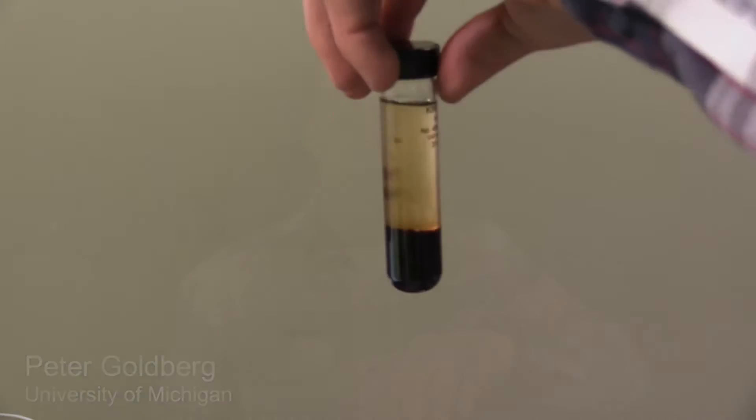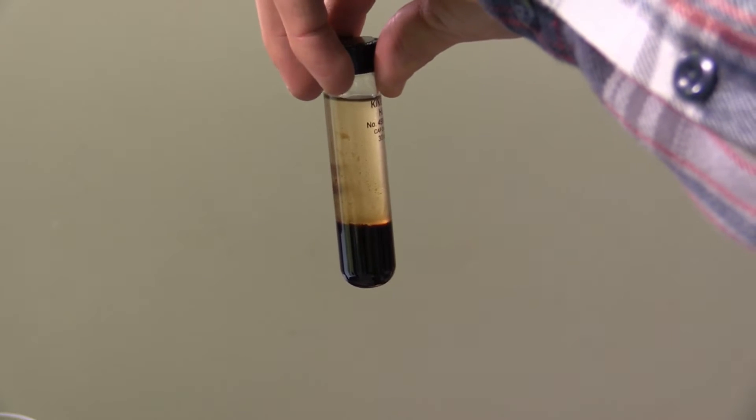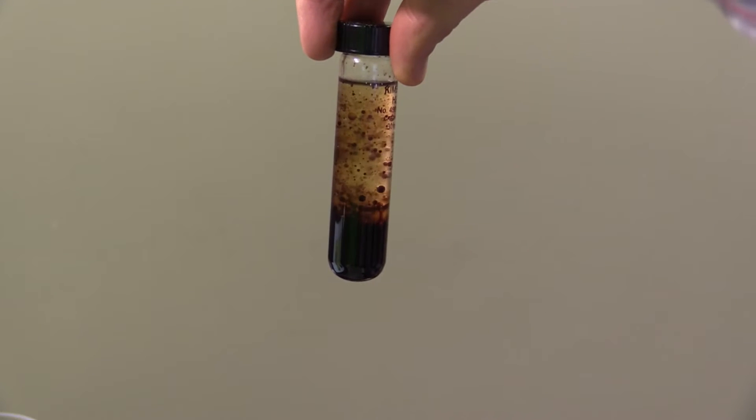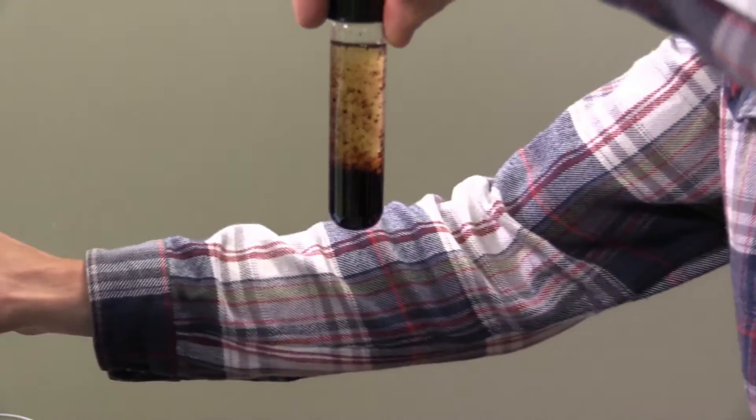But when I combine oil and vinegar to make a vinaigrette, they refuse to mix. I can shake it all I want, but it goes back to two separate layers every time. I can't dress a salad with this. The vinegar just runs straight to the bottom.